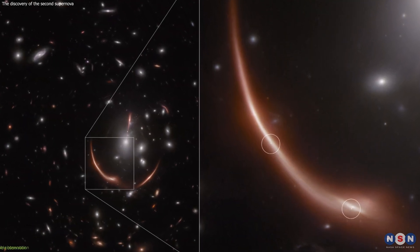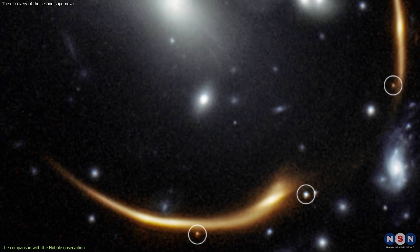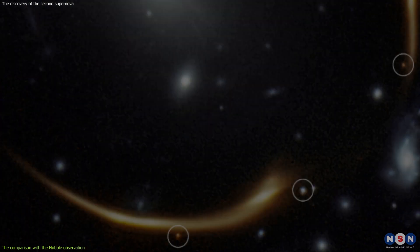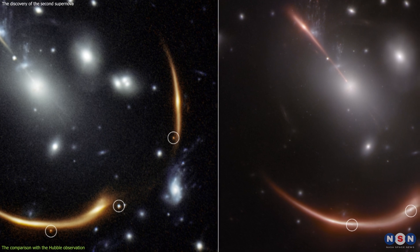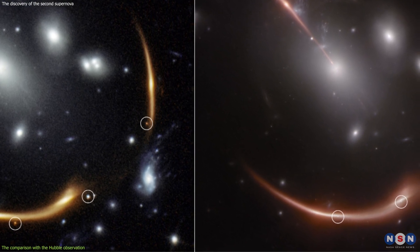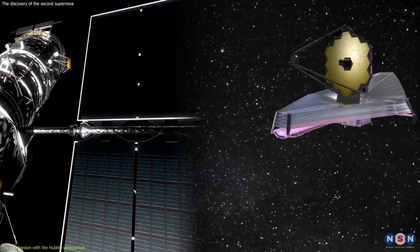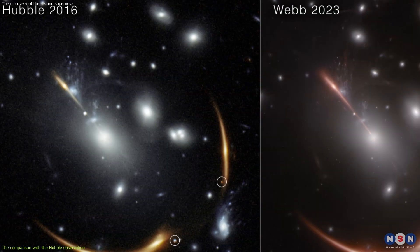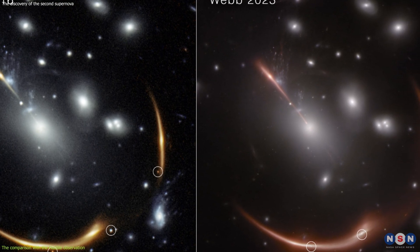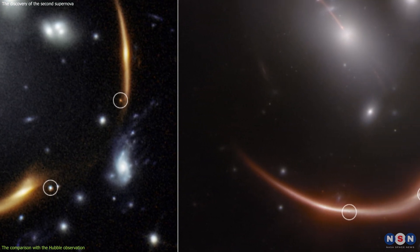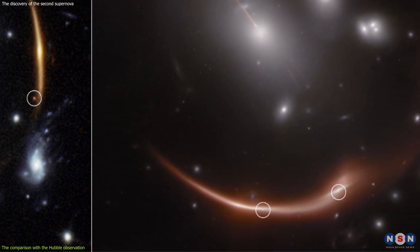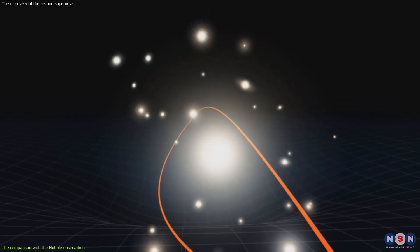Now that we know that the second supernova that Webb detected is the same as the first one that Hubble detected, we can compare the two observations and see what they tell us about the nature and type of the supernova. As you know, Webb and Hubble have different wavelengths and sensitivities, and they complement each other in observing the supernovae. The brightness of the supernovae, as seen by Webb and Hubble, can tell us how far away they are and how much they are magnified by the cluster.